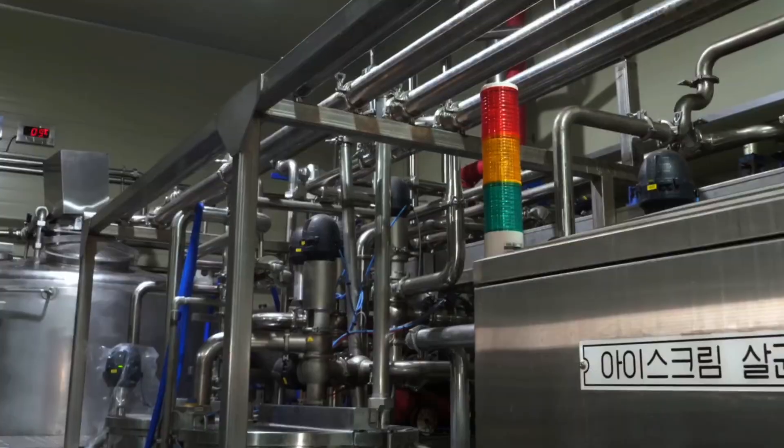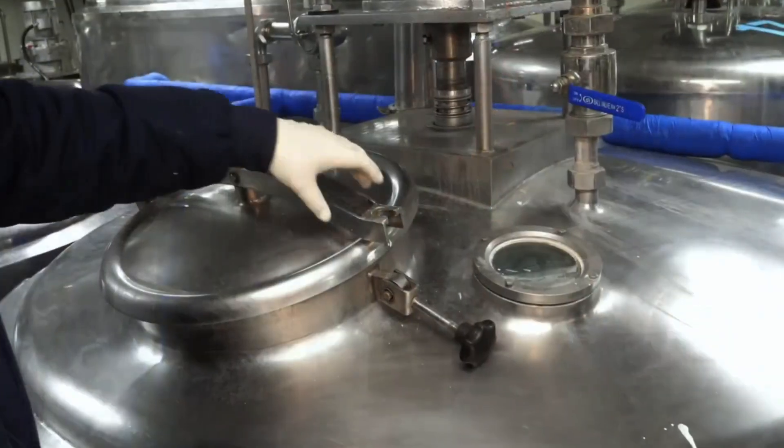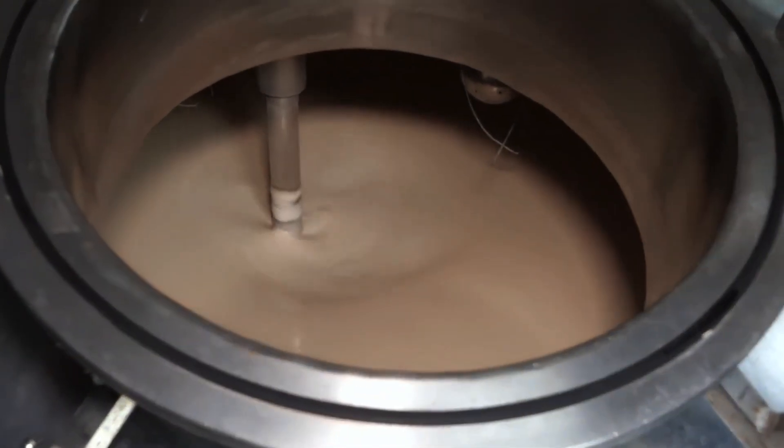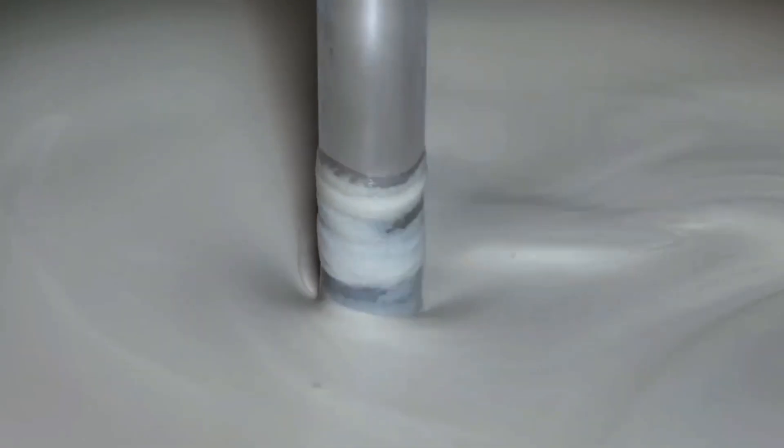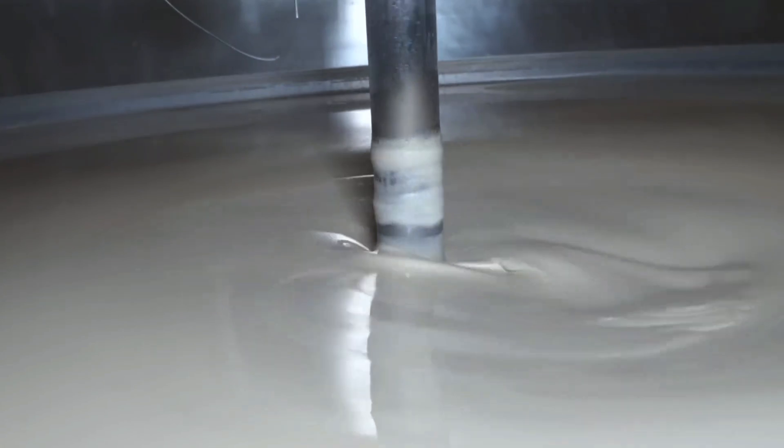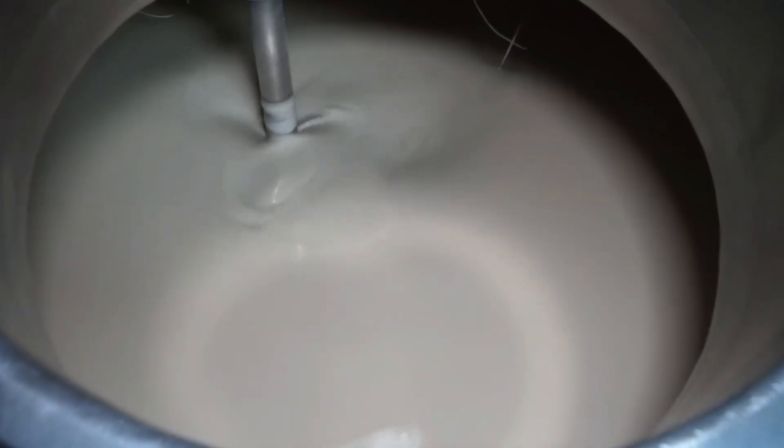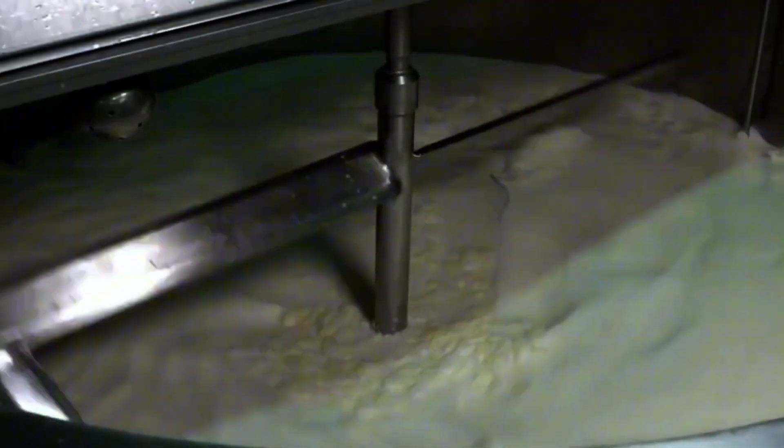The resulting mixture is sent into large industrial mixers, where the first key transformation begins, the creation of the ice cream base. It is at this stage that the future characteristics of the ice cream are formed. How creamy, sweet, dense, or airy it will be.